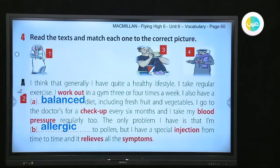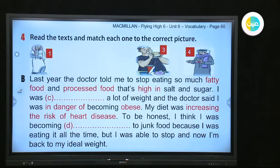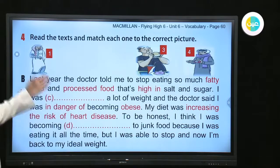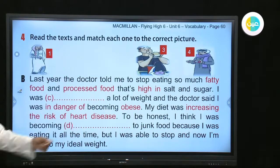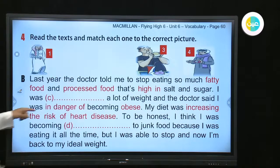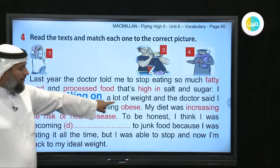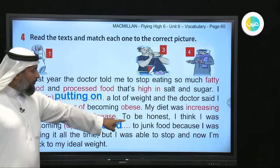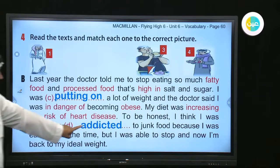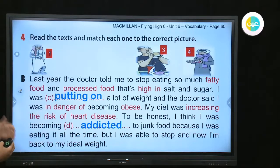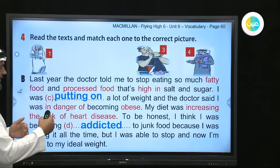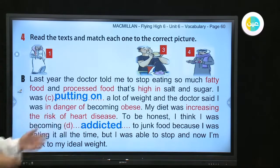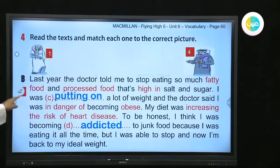Paragraph B: 'Last year the doctor told me to stop eating so much fatty food.' Which picture shows someone eating fatty food? It's the one eating fast food — number three. 'I was putting on a lot of weight.' He was becoming addicted — addicted means he always did it, he couldn't stop. He was addicted to junk food.